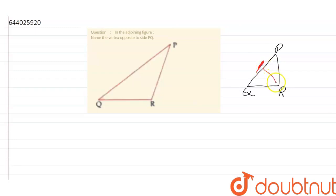So opposite to PQ there is only one vertex, that is R. The vertex which is opposite to PQ is R. Suppose we were asked: vertex which is opposite to QR? If we were asked the vertex opposite to QR, then it would be P. Similarly, if we were asked vertex opposite to PR, it would be Q.